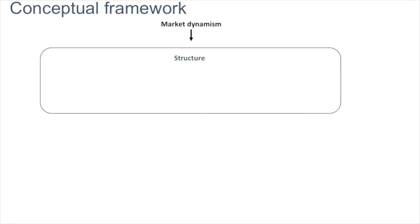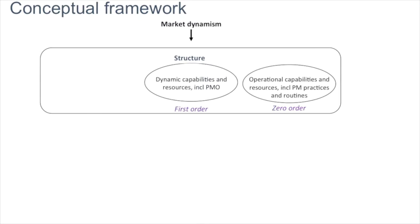Let's now see how this theory is applied to the business world. Several elements compose a structure in an organization. We have, for example, operational capabilities, which are more common resources and routines. We also have dynamic capabilities and things such as learning capabilities.